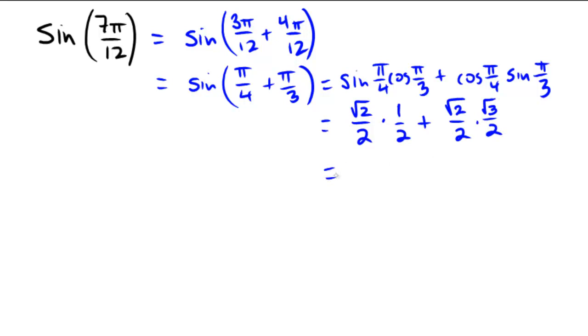So common denominator, 2 times 2 is both going to be 4s on the bottom. Radical 2 times 1 is radical 2. And radical 2 times radical 3 is radical 6. So the final number we're expecting is radical 2 plus radical 6 over 4.